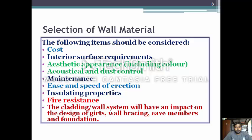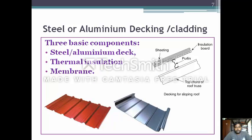The wall material should be of higher resistance. The wall system should account for impact and the design of girts, wall bracing, and the members and the foundations. The three basic components of aluminum decking or cladding are steel or aluminum deck, thermal insulation, and membrane.